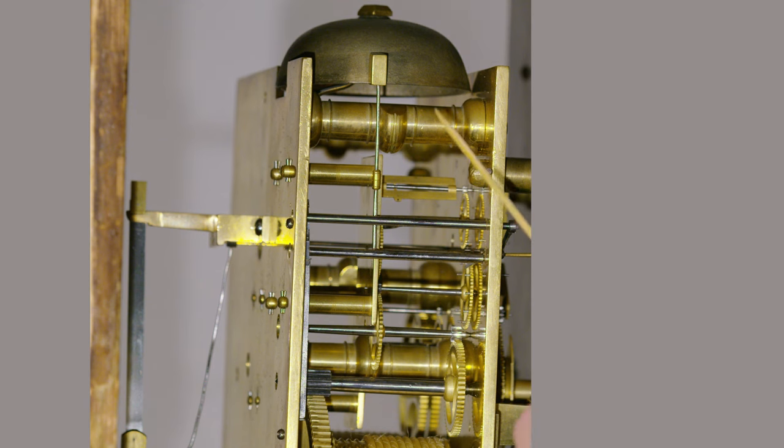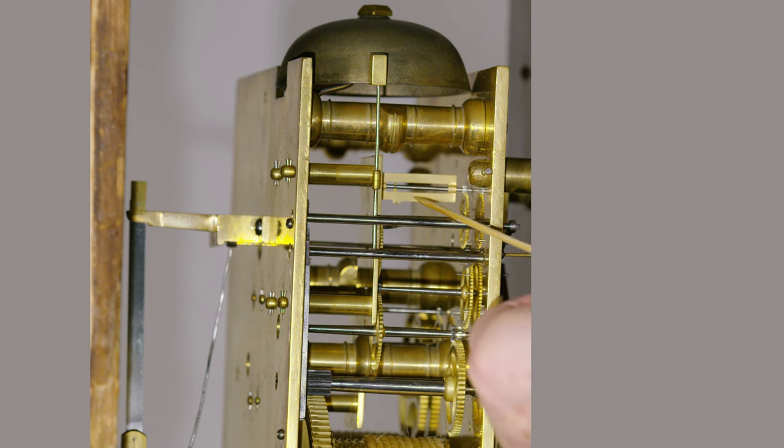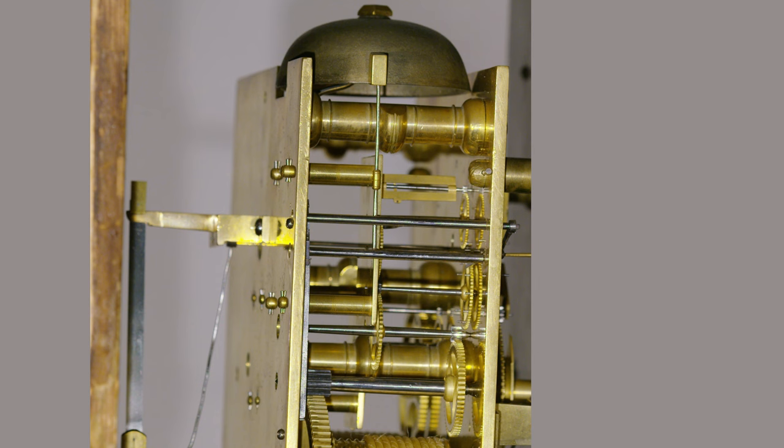You can see the fly, it's a tiny little fly. When you think of the reduction through the six-wheel train, the fly has very little to drive it and so it doesn't need a great big fly to keep it going at the correct speed.